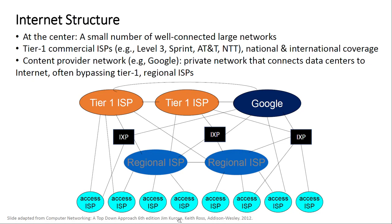Most of the time at our homes we connect to an access ISP, go through the regional ISP, maybe to a Tier-1 ISP, and then connect to the web page or service we're trying to reach.